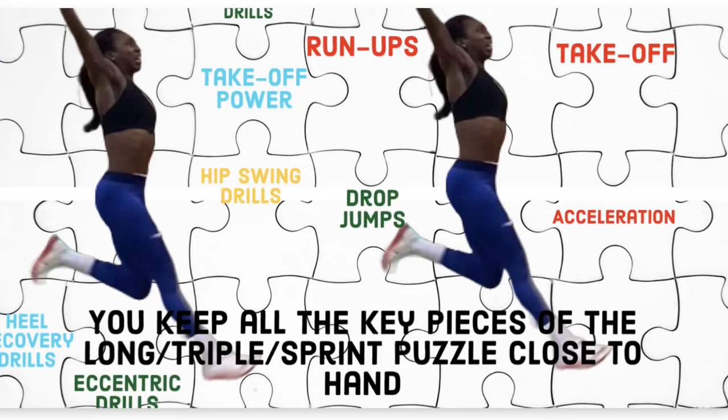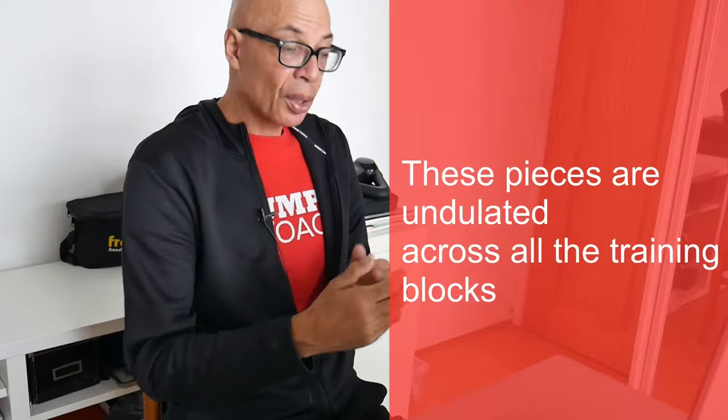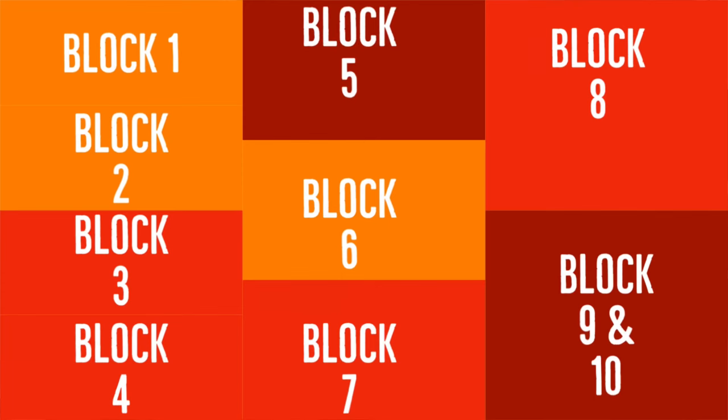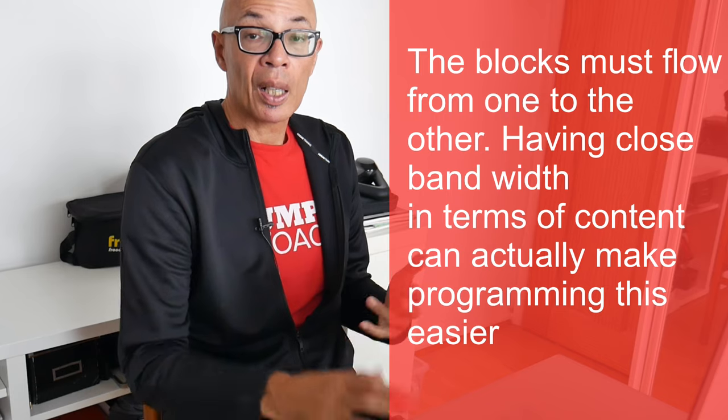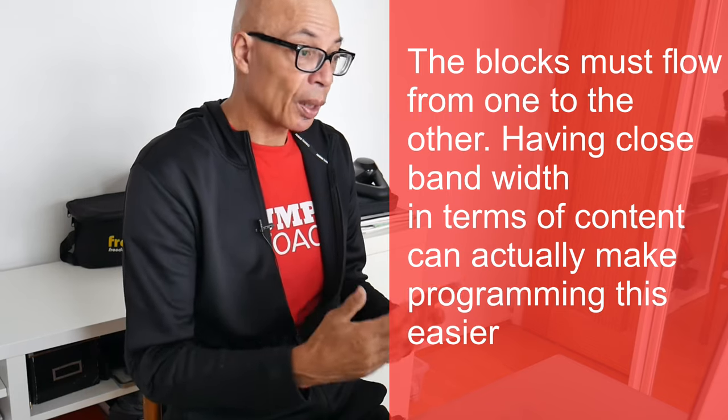I play all parts of the long jump, triple jump, and sprint jigsaw puzzle closely all the time so they can easily be put together — takeoff power, hip swing drills, drop jumps, run-ups, takeoffs, accelerations, heel recovery work, eccentric drills, etc. These are constantly meshed together throughout the training blocks so they bring about peak performance and ensure the athlete is technically proficient with greater speed and power, with no mismatch between those elements. You've got to make sure that each training block potentiates to the next.